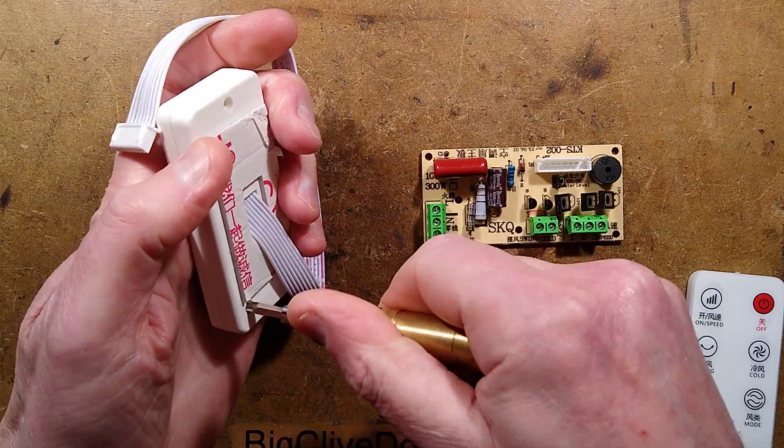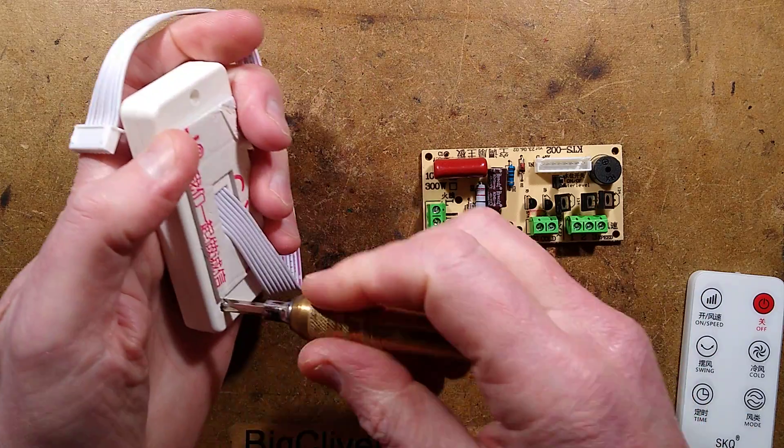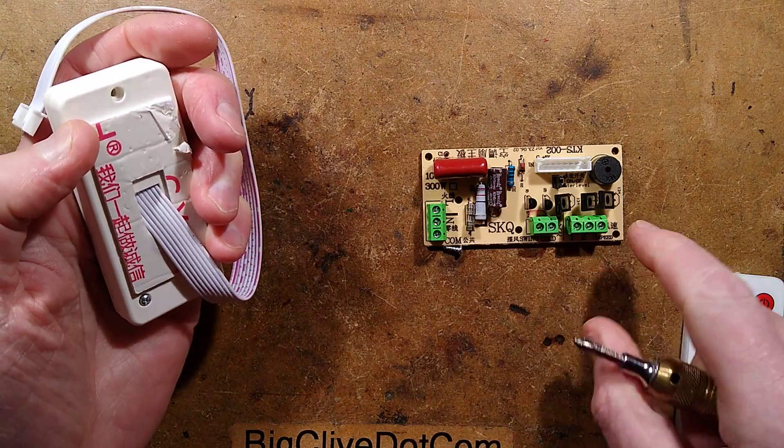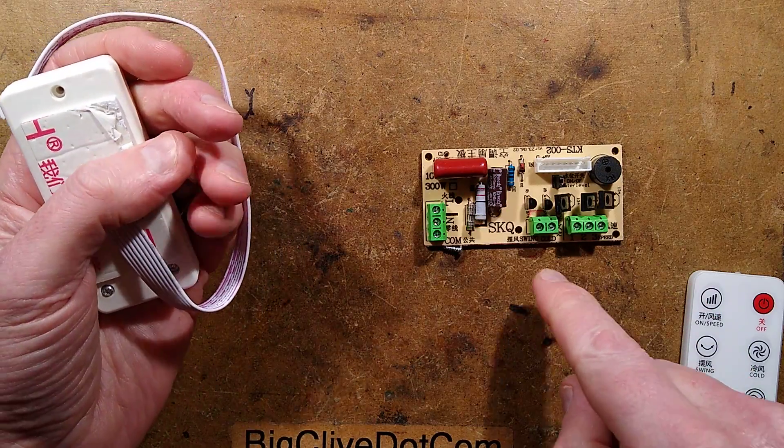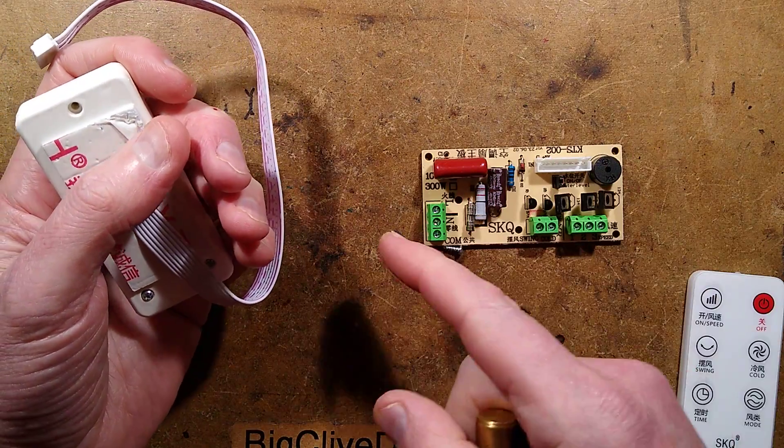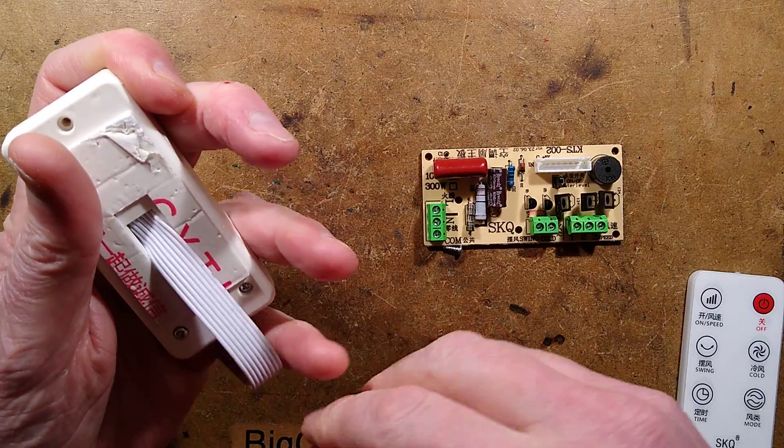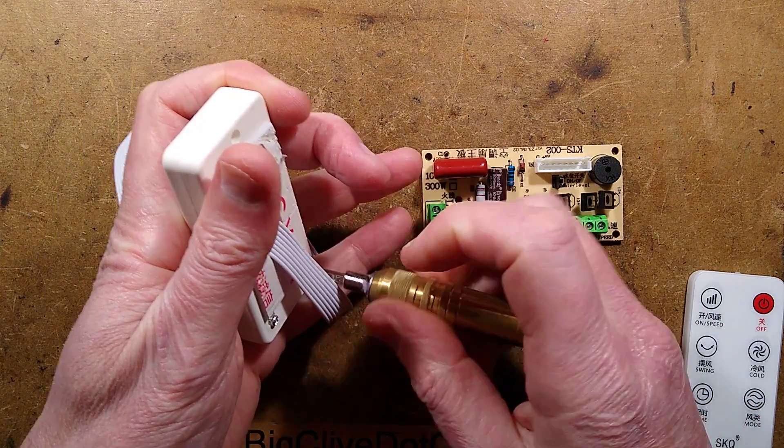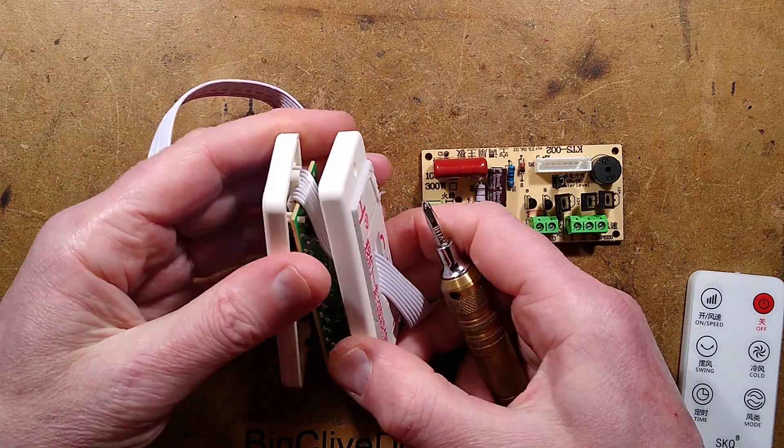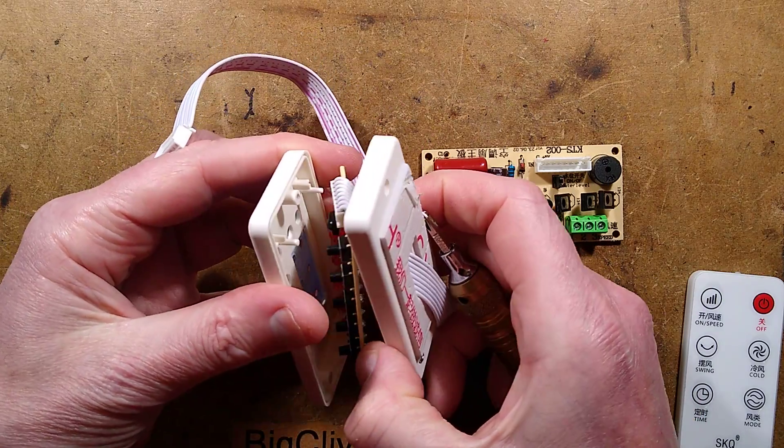Basically it's five triacs. Three of them, the big ones, are for the fan speed control. One of them is for swinging the fan backwards and forwards or you could use it for an ionizer if you wanted. And the other one is for a pump for pumping cold water over one of the filter materials to actually give a cooling effect.